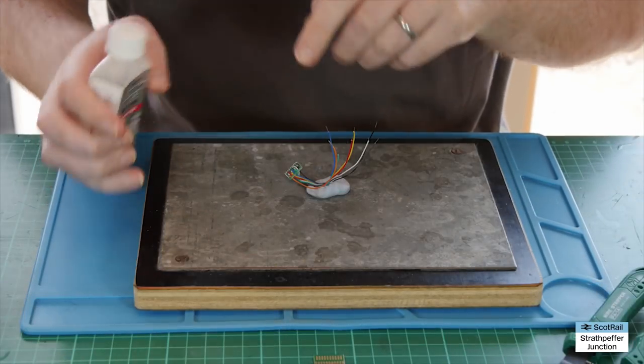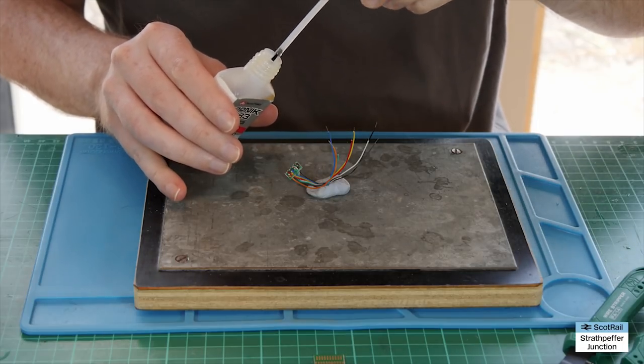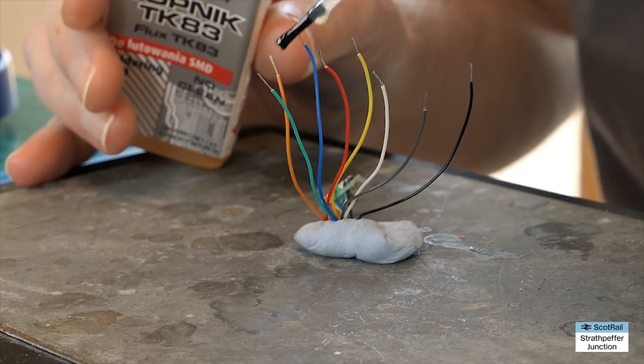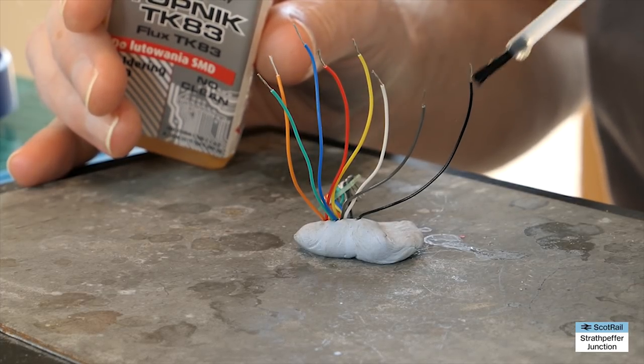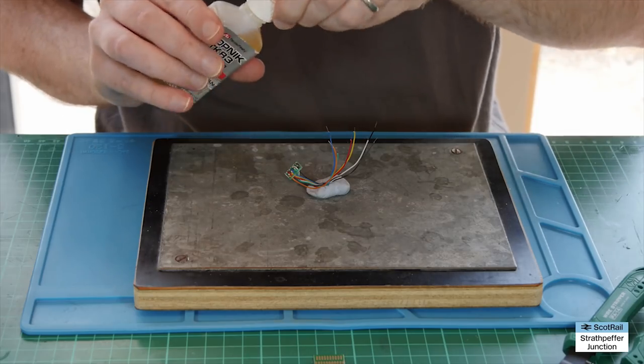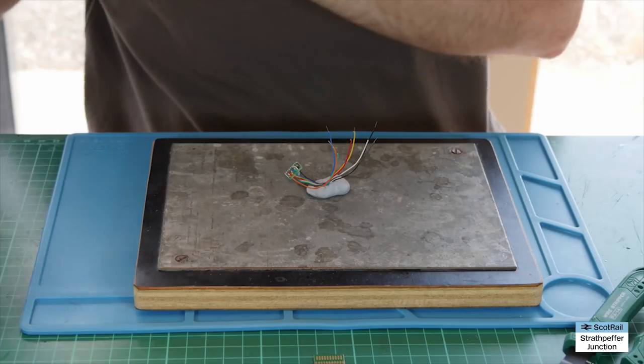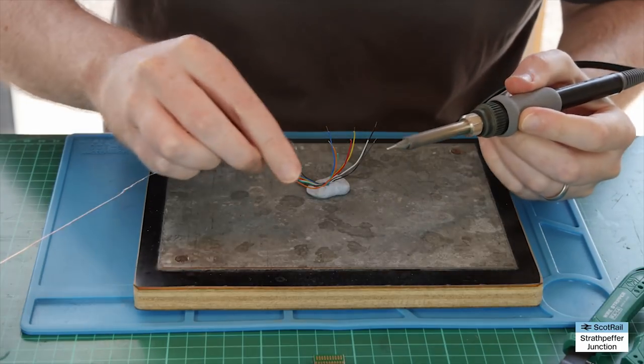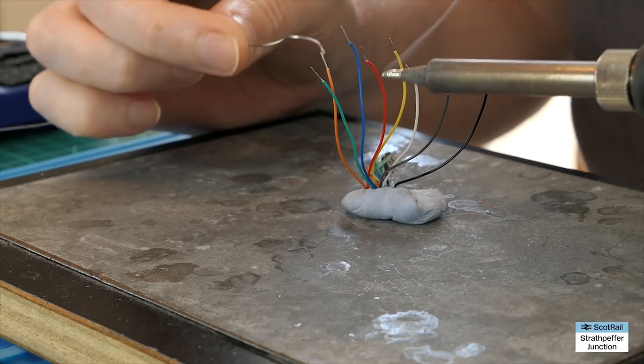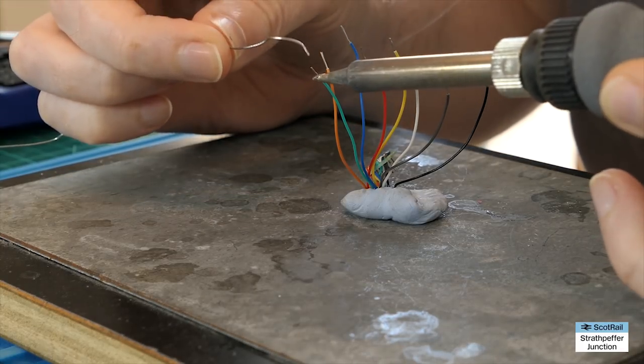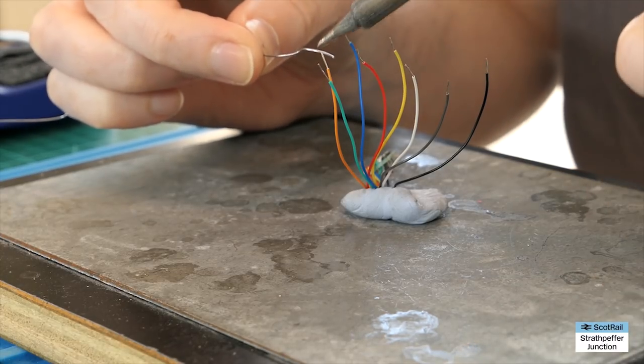I've stripped everything back, and I'm going to apply a little bit of flux. It's not absolutely necessary, particularly if you use flux core solder, but I find it helps everything flow really nicely and ensures you get a good solder joint first time, every time. I've got my soldering iron heated up. I'm going to wet the tip slightly with solder, then tin all these wires by touching the iron against them and dabbing a bit of solder on.